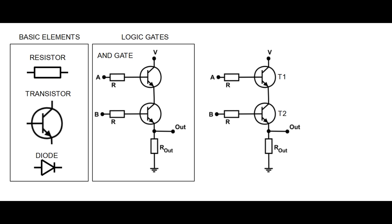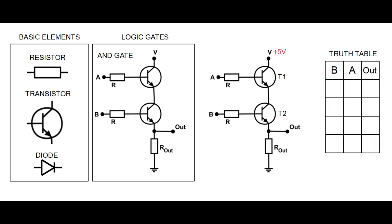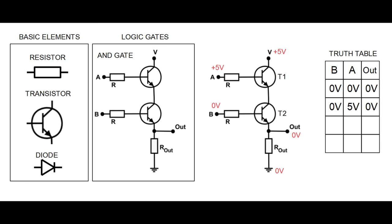Here you can see a logic AND gate made from two transistors and three resistors. With plus 5 volts connected to the collector of transistor T1: if both inputs A and B are at 0 volts, the output is 0 volts. If input A is 5 volts and input B is 0 volts, the output is still 0 volts. Likewise, 0 volts on A and 5 volts on B also gives 0 volts output. But if both inputs are at plus 5 volts, the output is also plus 5 volts, because both transistors are in the open state.